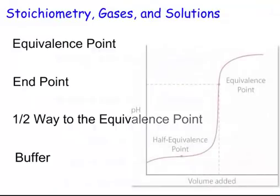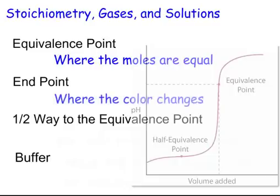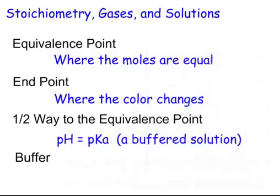Let me take a look at equivalence point. What is the equivalence point? It's where the moles are equal, where M1V1 equals M2V2. What's the end point? Where the color changes. Now, we like to get these to be exactly the same. If they put end point in a problem, you can assume it's the equivalence point. When we're halfway to the equivalence point, though, our pH is going to be equal to our pKa. And that's where we have a buffered solution. That will be a buffer.